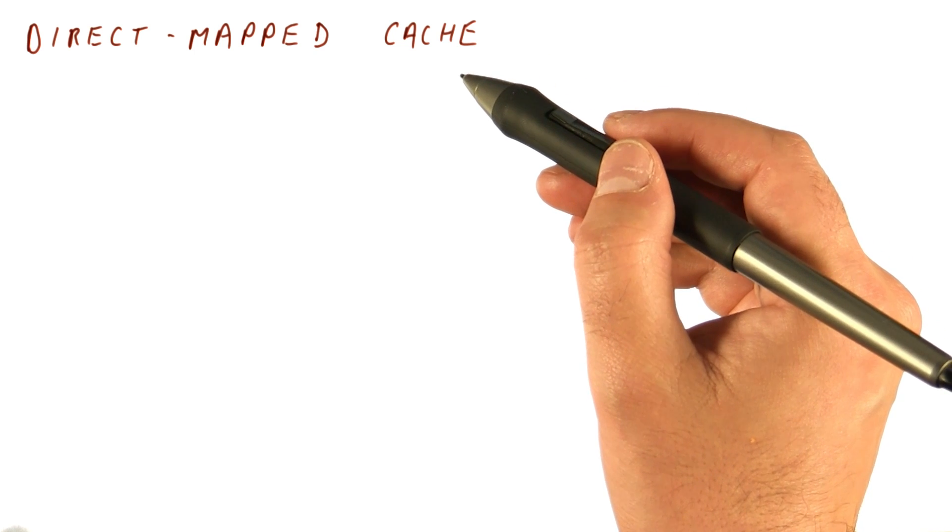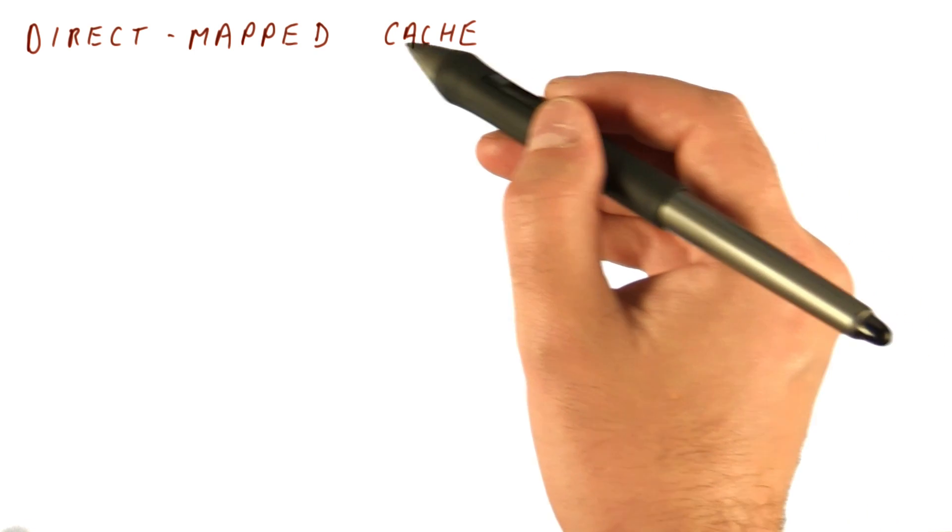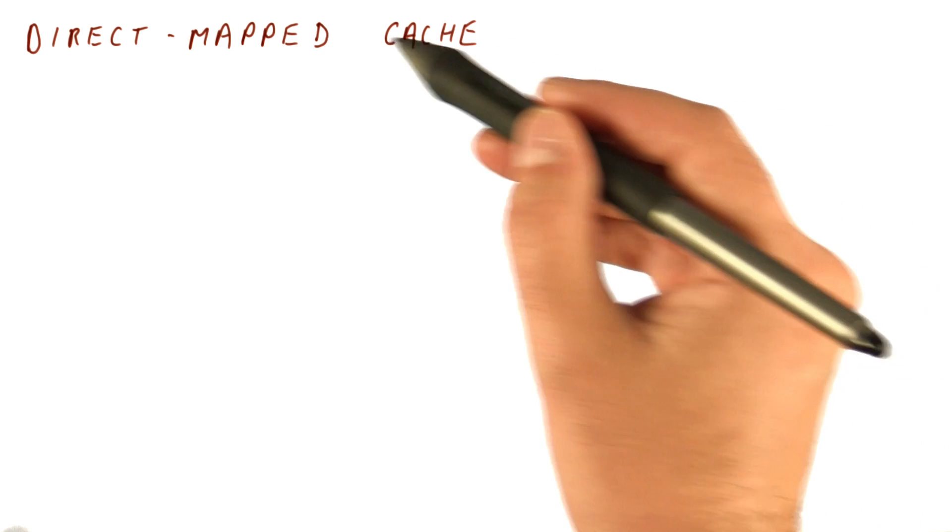We have seen a glimpse of fully associative caches. So now let's go from the other direction, which is, let's first look at direct map caches.